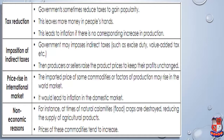Price rise in the international market: the imported price of some commodities or factors of production may rise in the world market, and this would lead to inflation in the domestic market. Non-economic reasons: for instance, at times of natural calamities, crops are destroyed, reducing the supply of agricultural products, and prices of these commodities tend to increase.